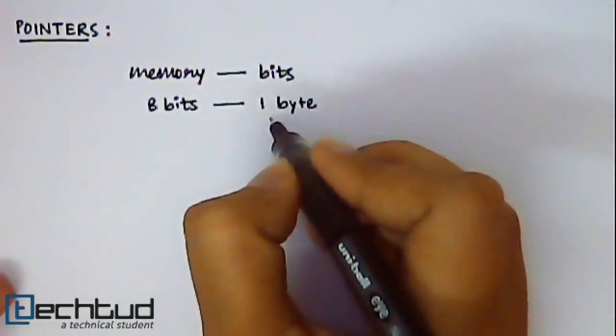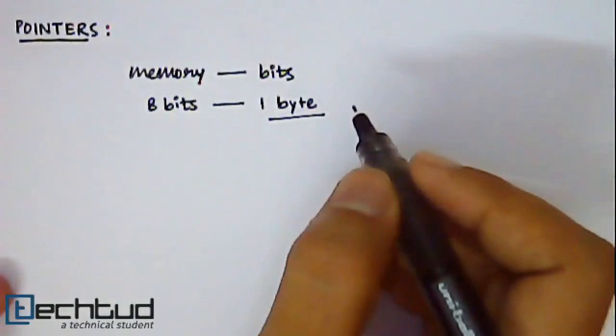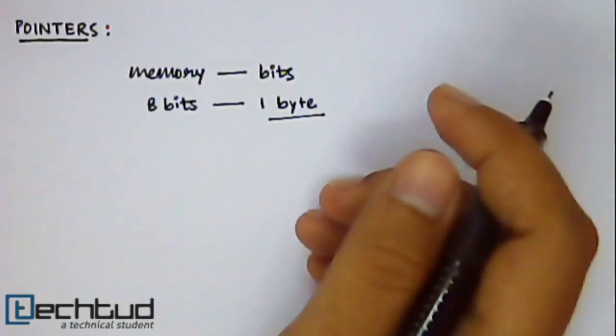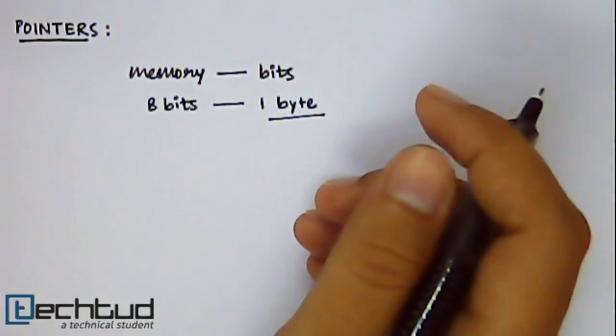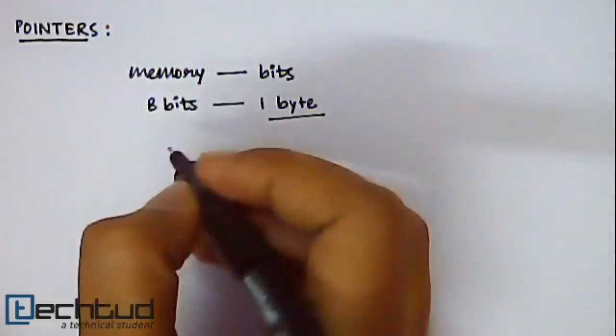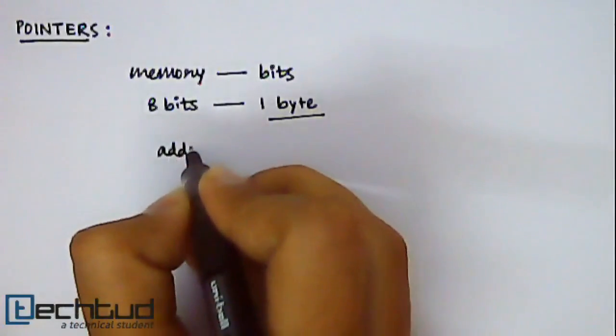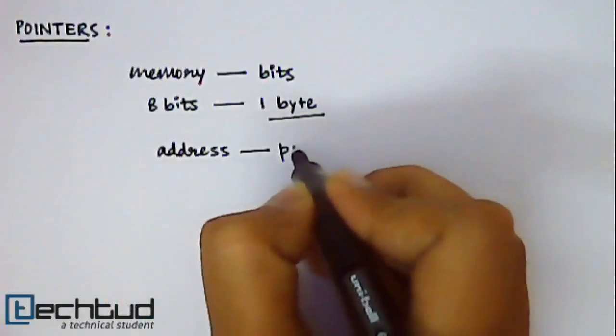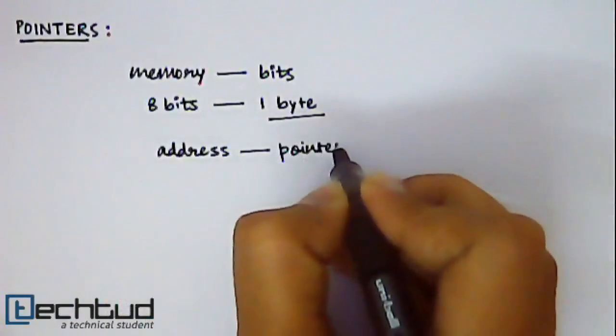Now each such byte that is 8 bits are recognized by a unique location number which is also called address of that particular memory location. So if we want to store that address to some variable we will need pointer type of variable.